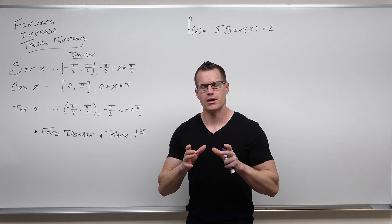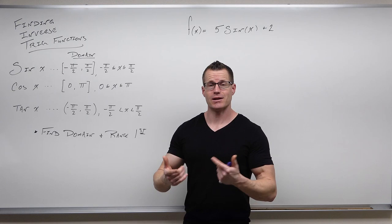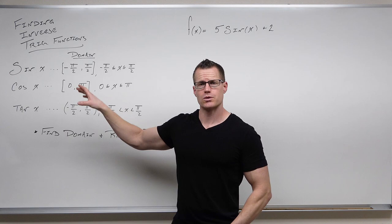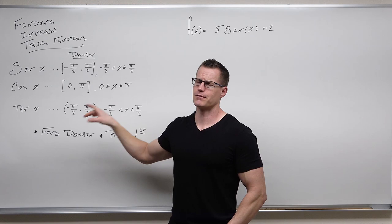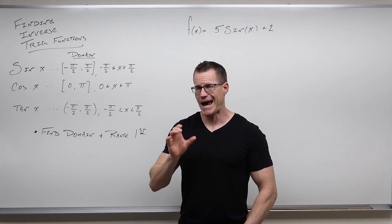For sine, cosine, and tangent, we had to restrict the domain in order to create a one-to-one piece of this function about which we could find an inverse. For sine, the domain has to be negative π/2 to π/2 inclusive. For cosine, it's 0 to π inclusive. And for tangent, it's negative π/2 to π/2 without those endpoints.